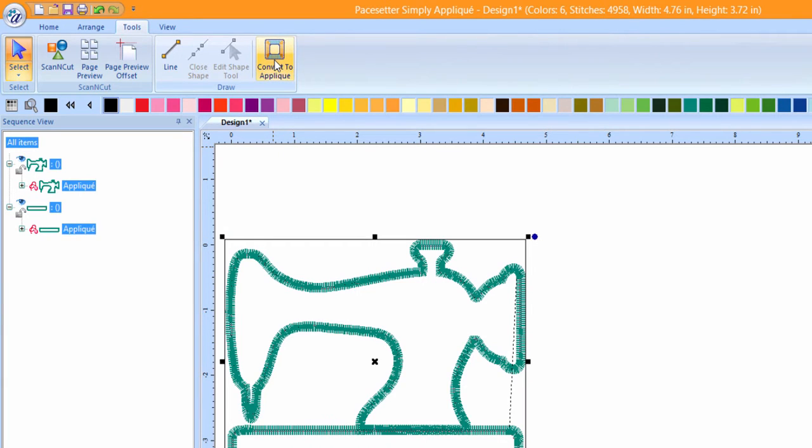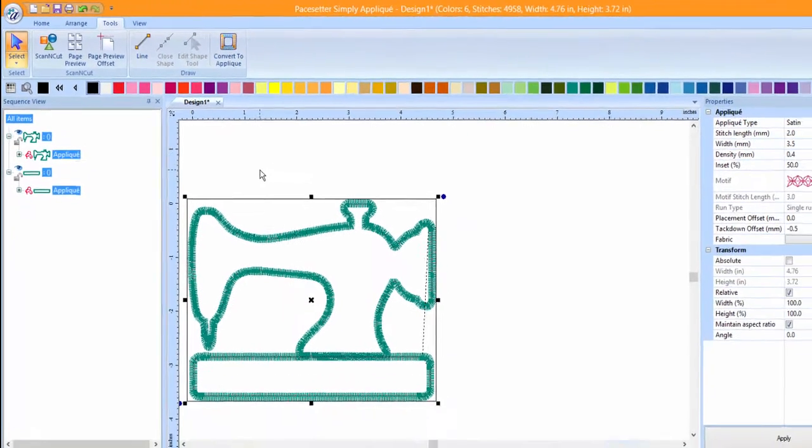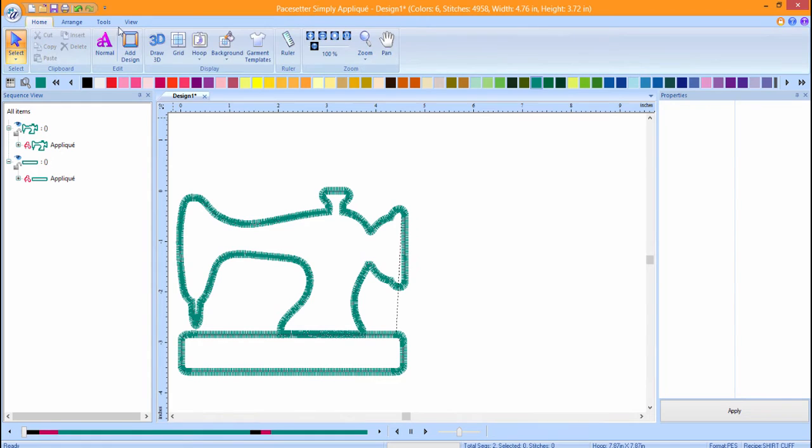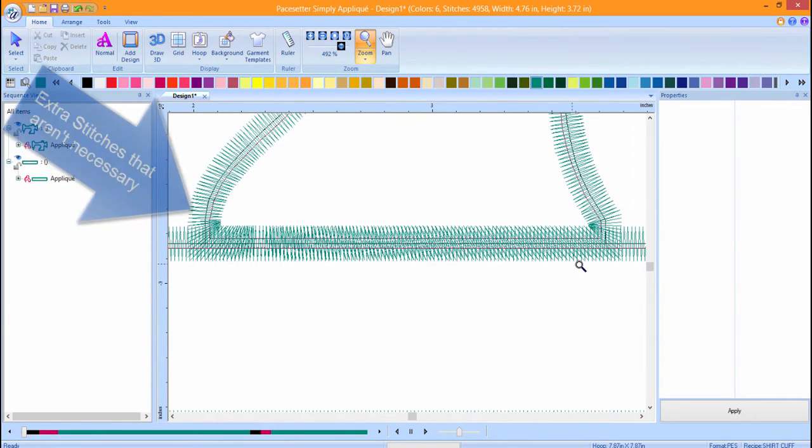Click on the Tools tab and choose Convert to Applique. We now have an applique sewing machine. We can do a little refining here, so let's zoom in and see where we need to refine it. You'll notice that there's extra stitches where the sewing machine and the base meet.